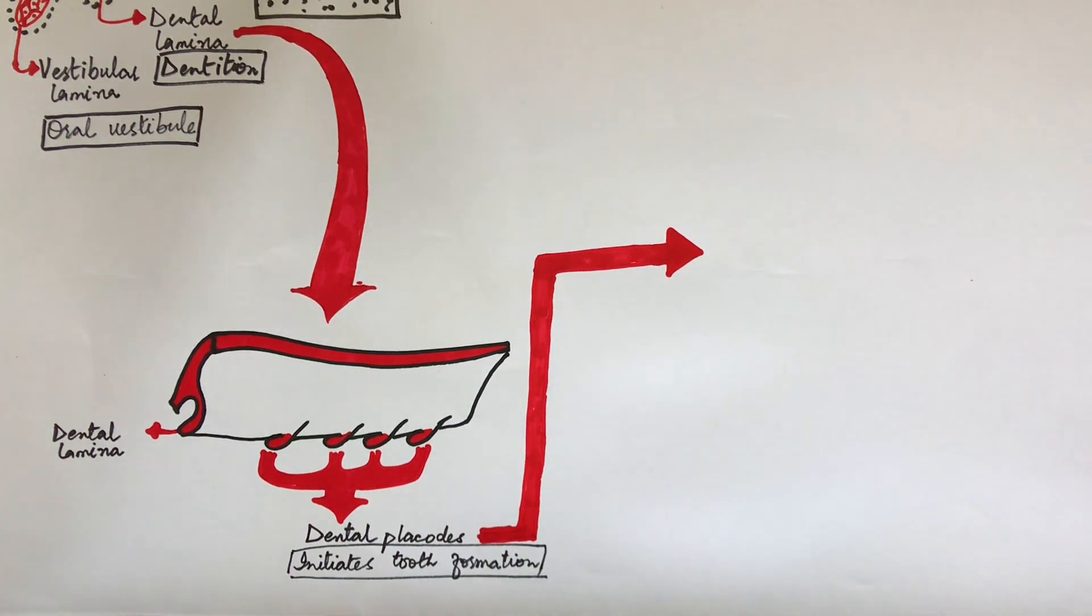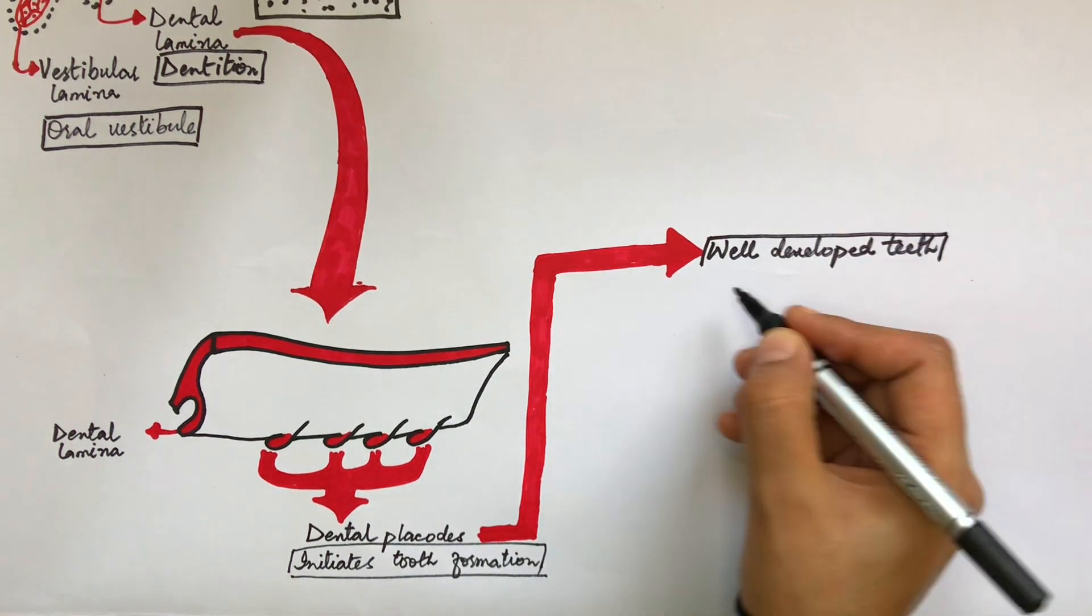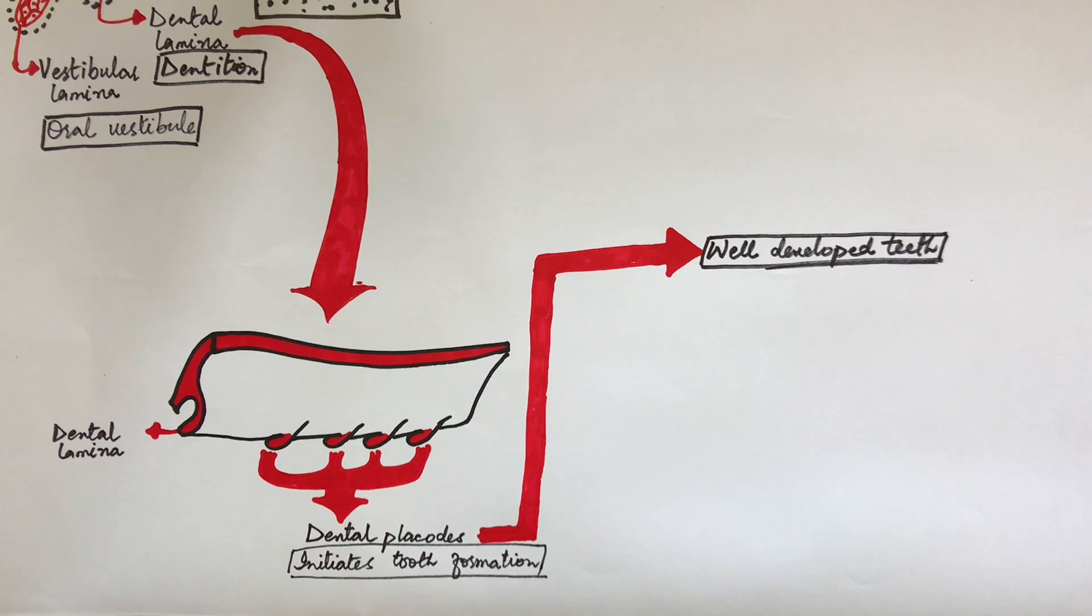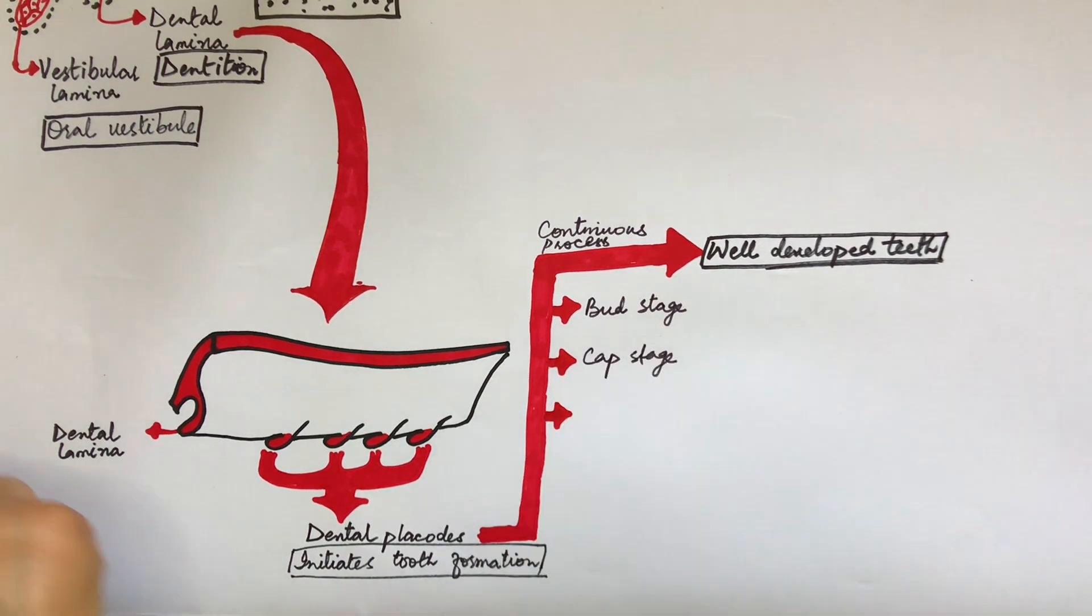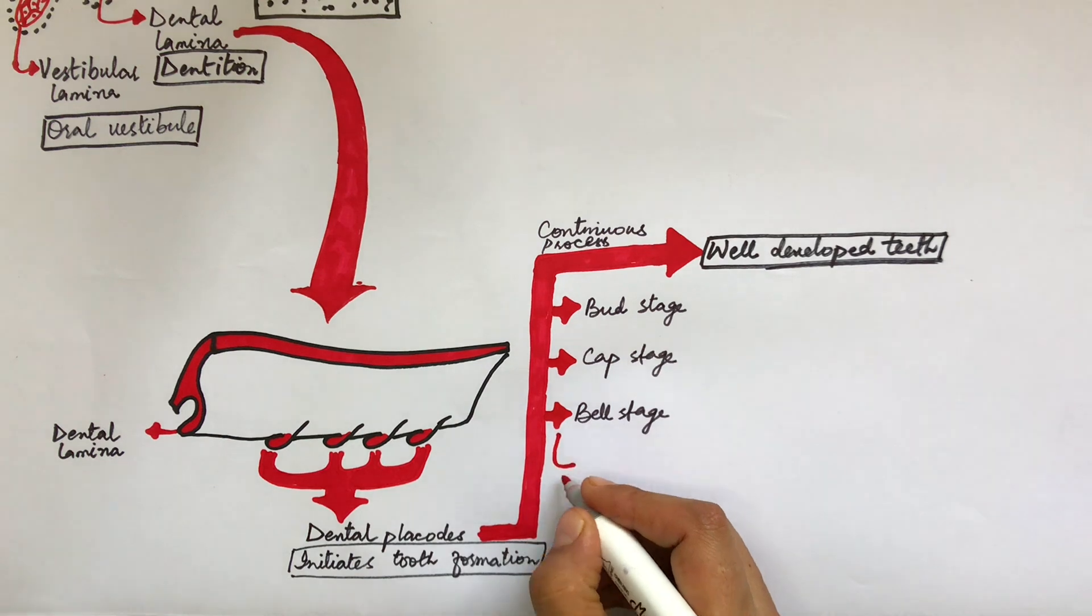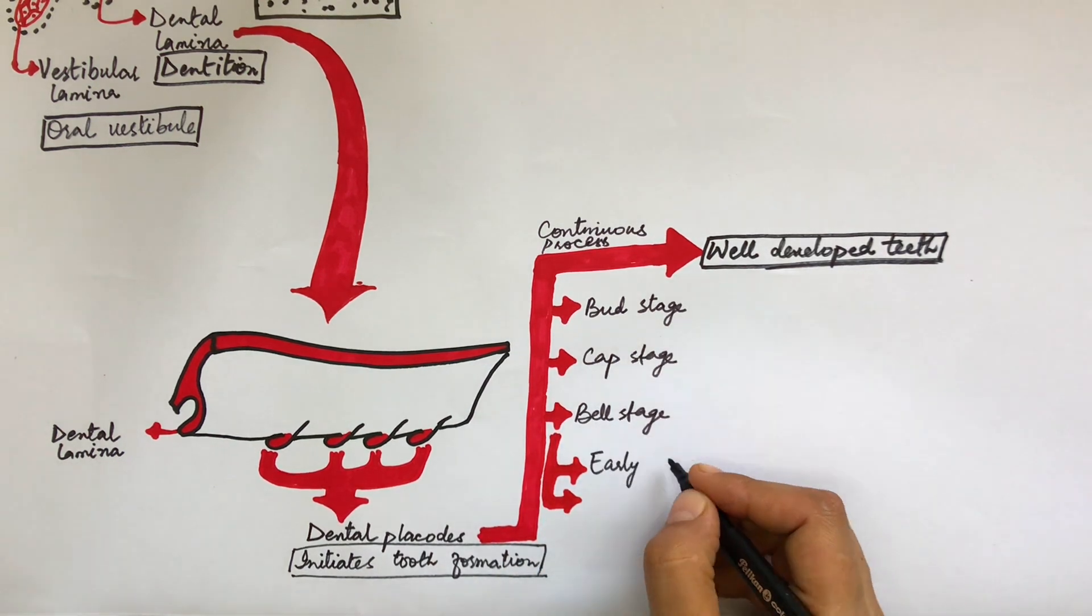The process of development of teeth from these dental placodes is thought to be a continuous process, which means that no clear boundary is present within its developmental stages. But for descriptive purposes, the developmental process is divided into three main stages: the bud stage, the cap stage, and the bell stage. The bell stage is further divided into the early bell stage and the late bell stage.